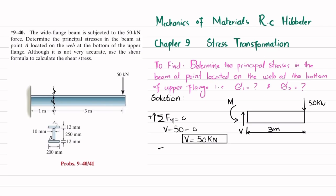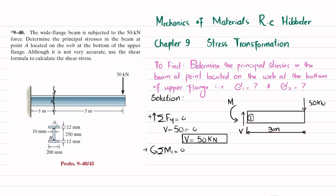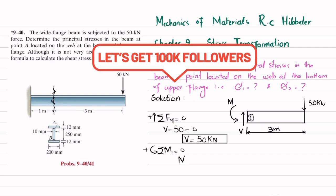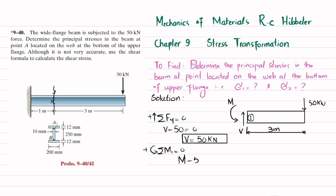The moment is obtained by taking the sum of all moments about point O1 equal to zero, with counterclockwise positive. The shear force passes through O1 and produces no moment. The 50 kN force produces a clockwise moment over the 3 meter distance, so M minus 50 × 3 = 0, giving M equal to 150 kN·m.